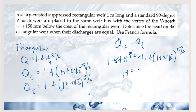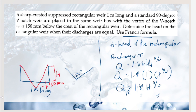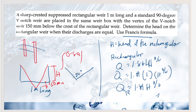Solving the equation 1.84 H^(3/2) = 1.4 × (H + 0.15)^(5/2), we get H = 0.891 meters. This is the head on the rectangular weir when both discharges are equal. That concludes our sample problems on weirs and unsteady flow. This is the end of our discussion for fluid flow measurement.